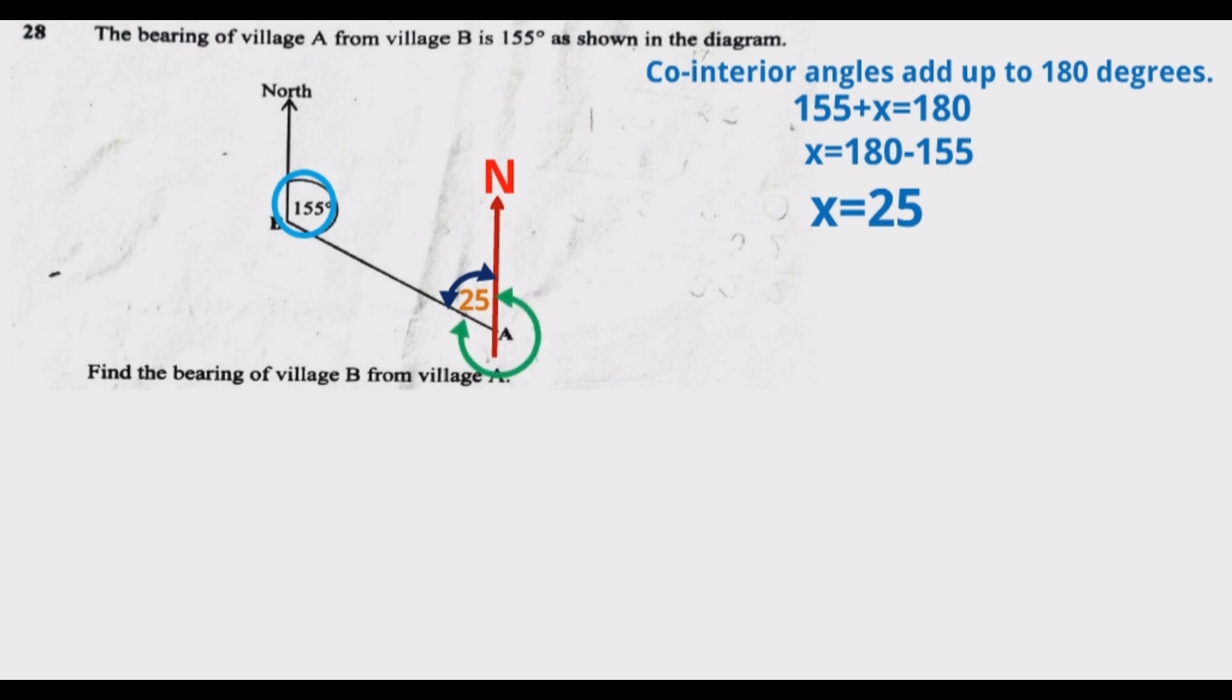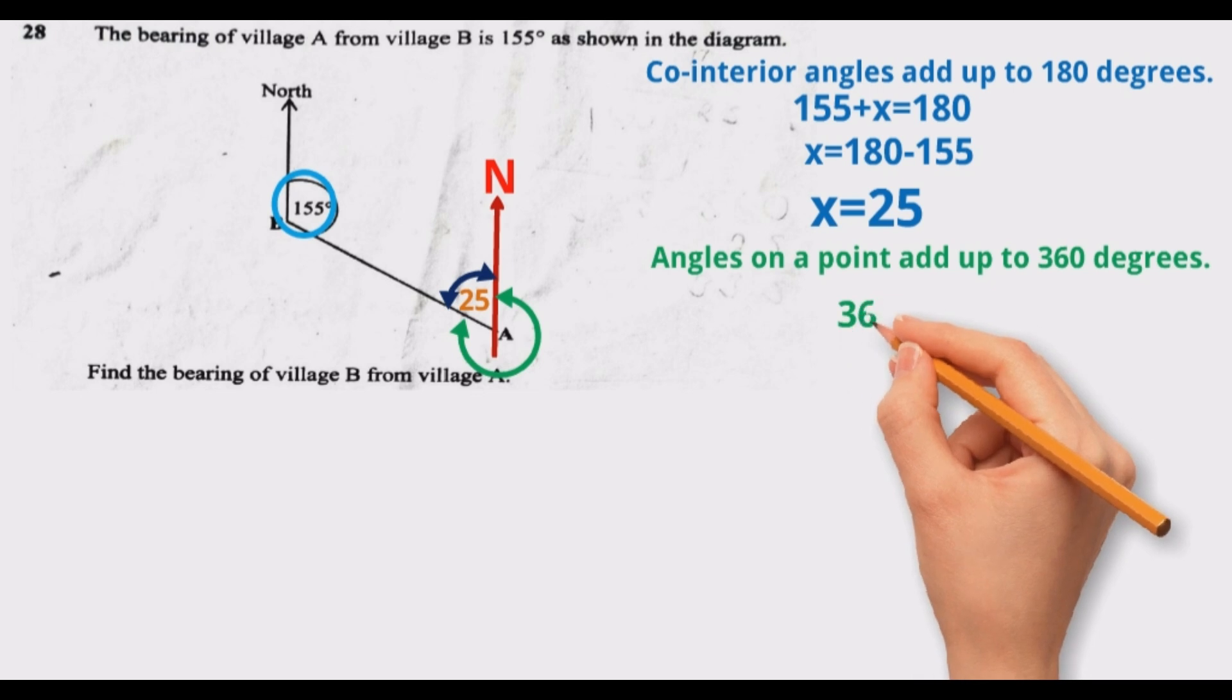So to find this bearing, we are going to use the property which is angles on a point add up to 360 degrees. A complete turn will give us 360 degrees. Now from 360 degrees we are just going to remove 25 degrees. So we can come up with an expression which is 360 degrees minus 25 degrees, which will give us 335 degrees.